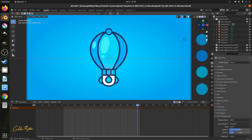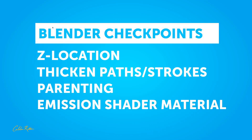To recap: first, set the Z location for all your objects; second, thicken any strokes using the Bevel operator if needed; third, set up parenting; fourth, apply the Emission shader for every color; and fifth, check your render Color Management settings and set View Transform to Standard instead of Filmic. The Emission shader in EEVEE is essentially the equivalent of the shadeless material from pre-2.8 Blender, making it ideal for flat motion graphic design and less render-intensive than other shaders.